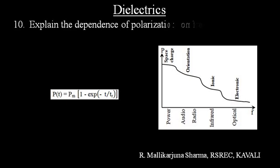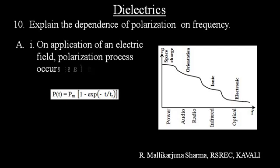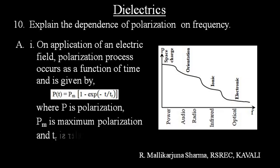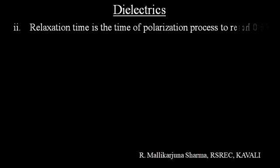Question number 10: Explain the dependence of polarization on frequency. First point: On application of an electric field, polarization process occurs as a function of time and is given by P(T) = PM(1 - exp(-T/TR)), where P is polarization, PM is maximum polarization, and TR is relaxation time.